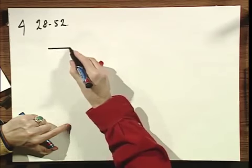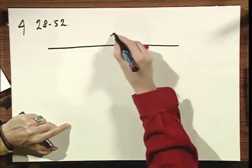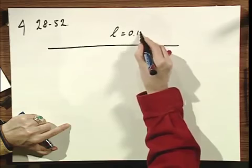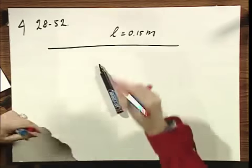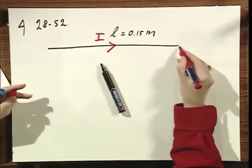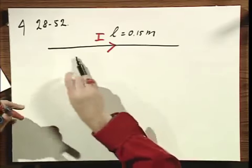I have a wire which has a certain length l which is 0.15 meters, and I have a current in that wire. Now that's a little bit funny because you can't have a current in a wire with a certain length.